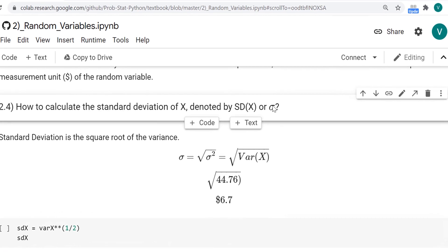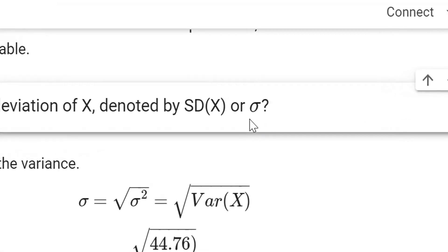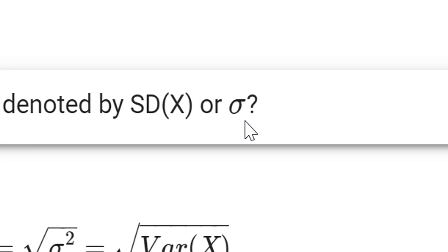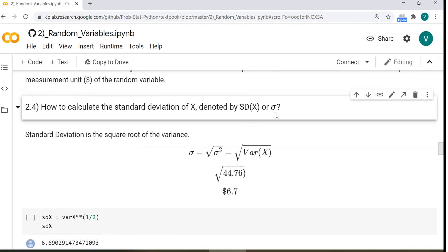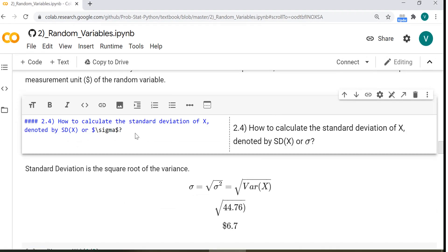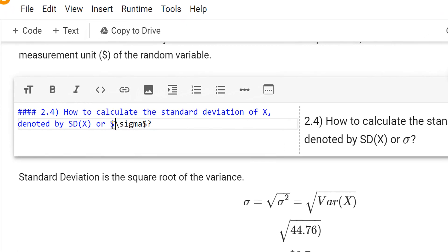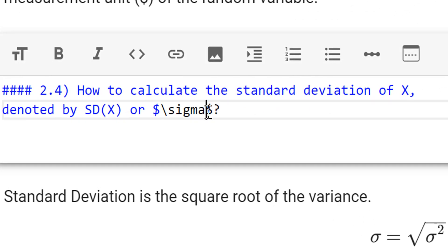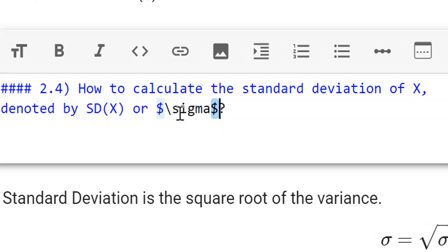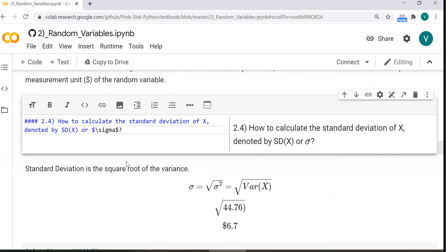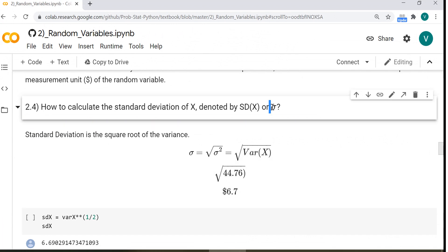Let's see how we can add this symbol here, the sigma, the Greek letter sigma, that is the standard deviation. Double click to see the source code. To insert LaTeX, we need the dollar symbol at the beginning and end. This tells the computer that the expression inside is LaTeX. The backslash indicates you want to call a symbol, like sigma. That's it. This is the sigma.